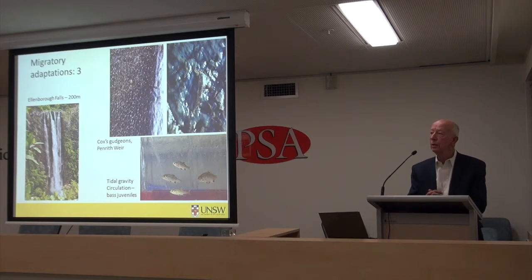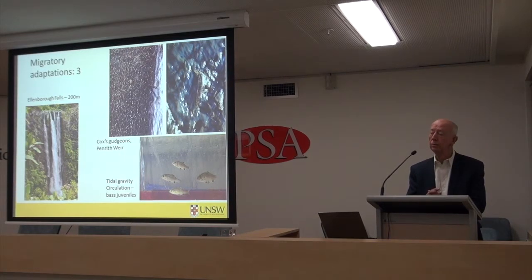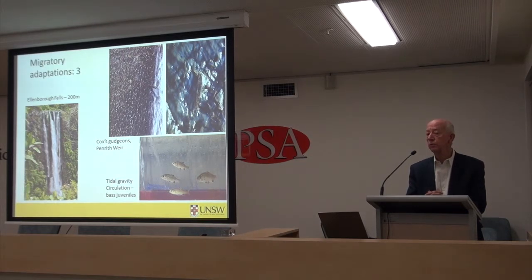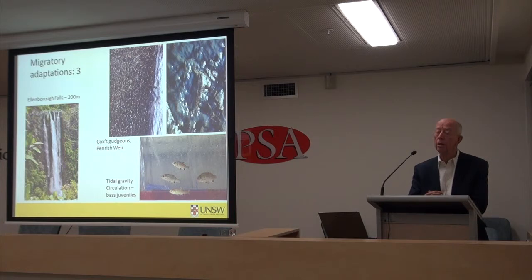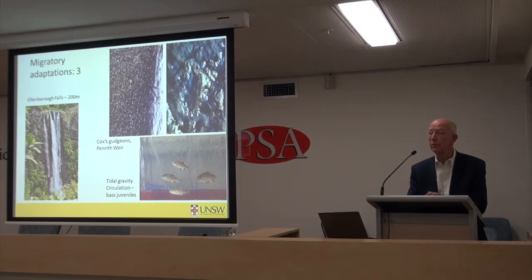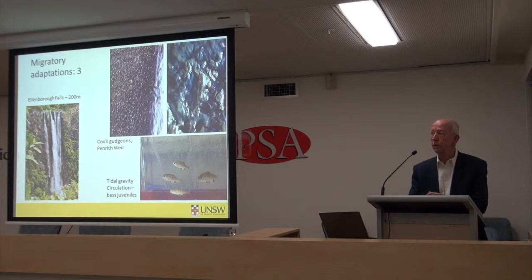A different kind of adaptation again. Both pictures on the top right were taken at Penrith Weir. They show a little fish species about as big as my little finger called a Cox's Gudgeon, one of several species that have enormous climbing ability. They're going straight up the wetted surface at Penrith Weir in their hundreds — there are hundreds of little Cox's Gudgeons in the left picture and an individual one on the right.